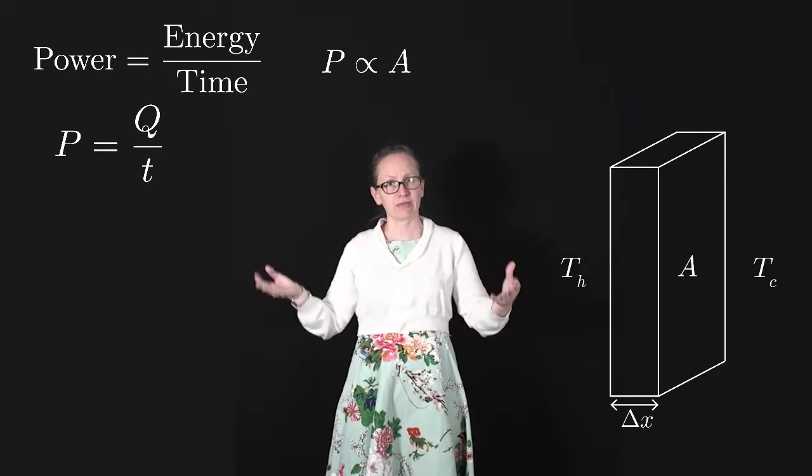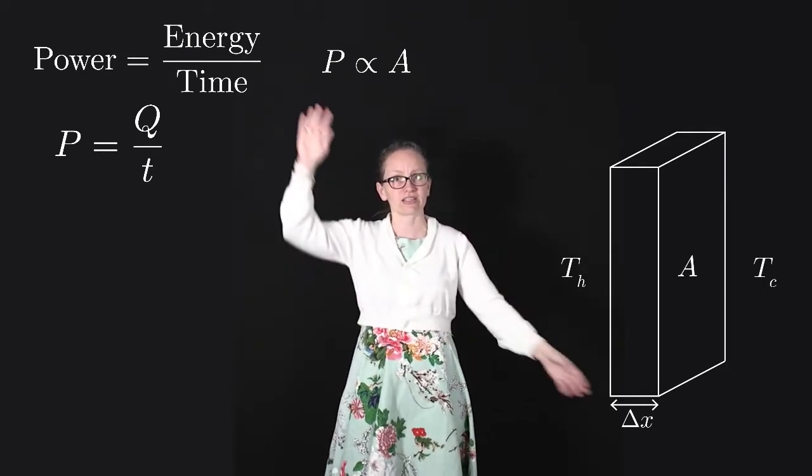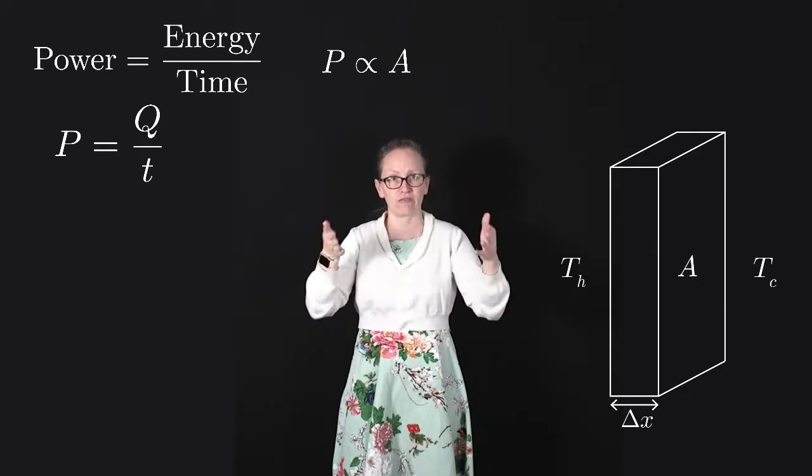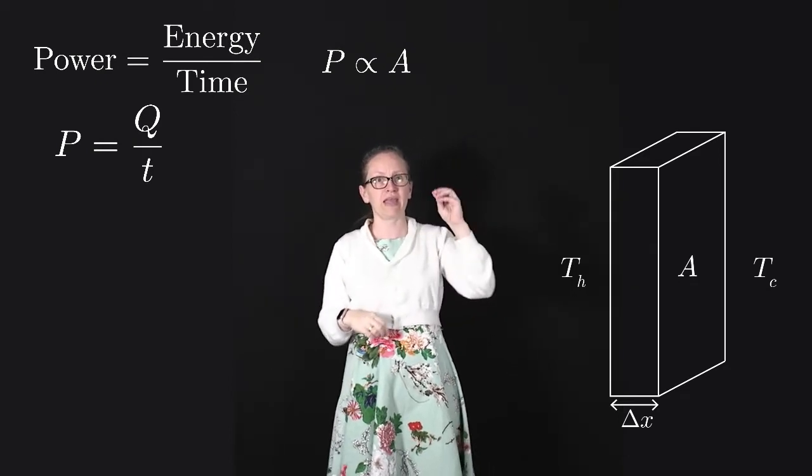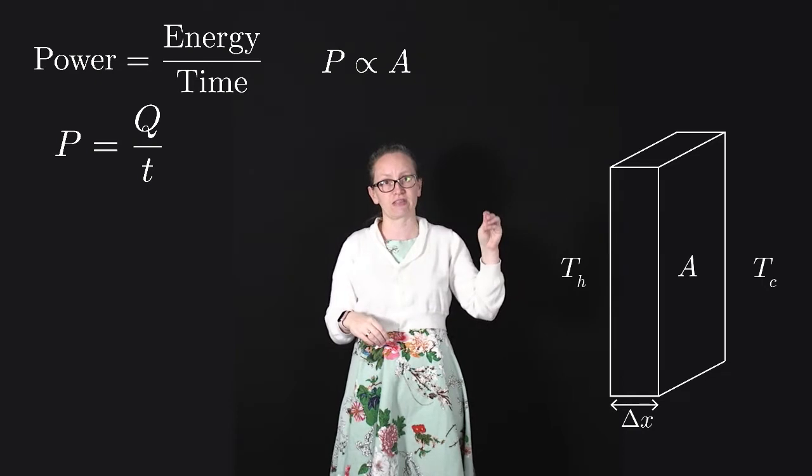In the middle of summer where it's really hot, you tend to spread out to increase that surface area. So P is proportional to the surface area A.